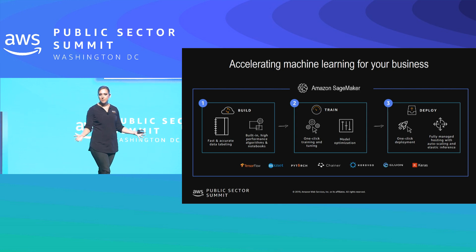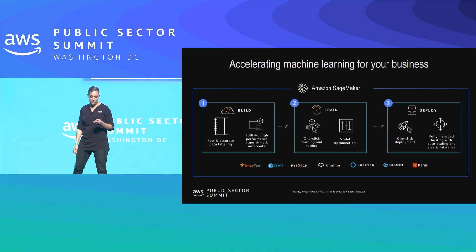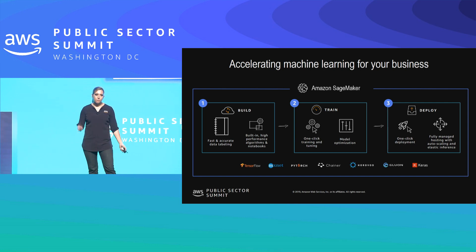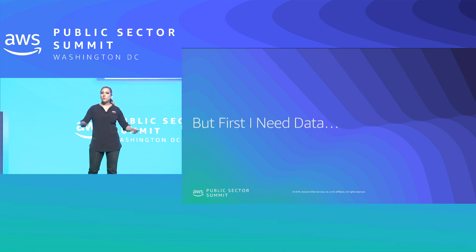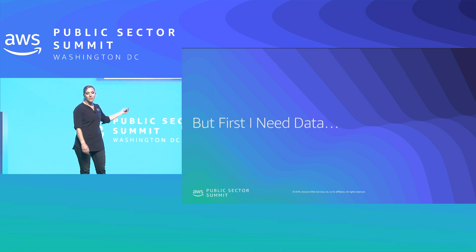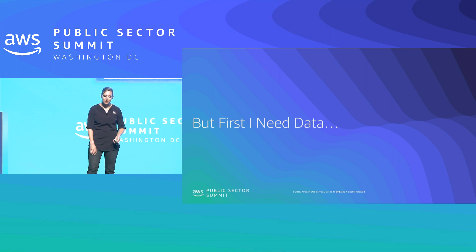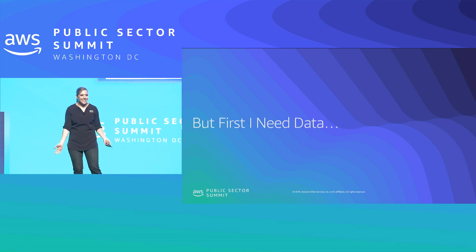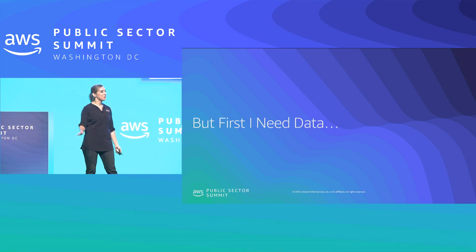If you're interested in going deeper on SageMaker, I recommend the SageMaker Deep Dive tomorrow. But today we're really going to focus on that first part of the process — because before we can use any of the cool features of Amazon SageMaker, we need data. Getting data is step one, probably one of the least exciting steps in the machine learning process, but also one of the most critical.